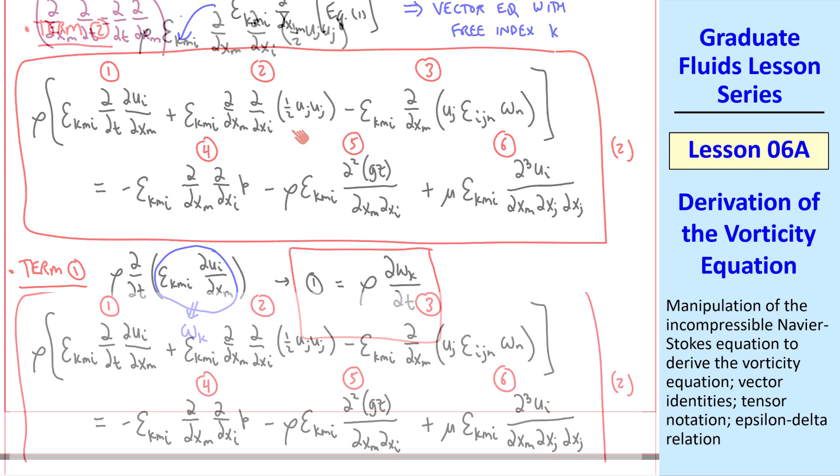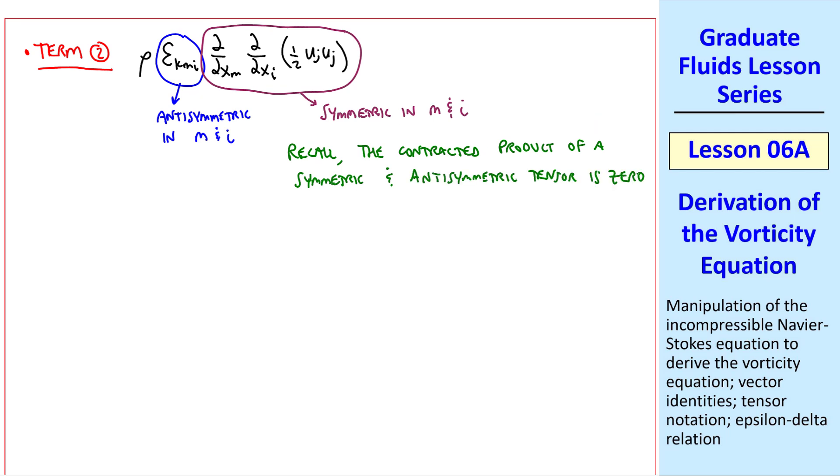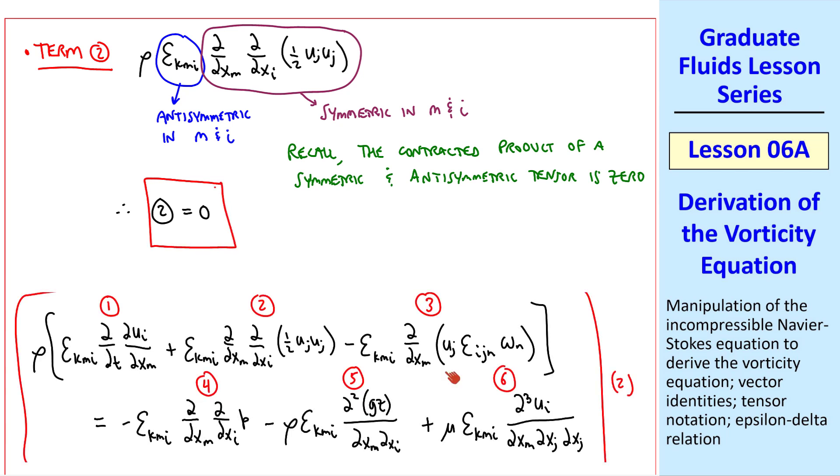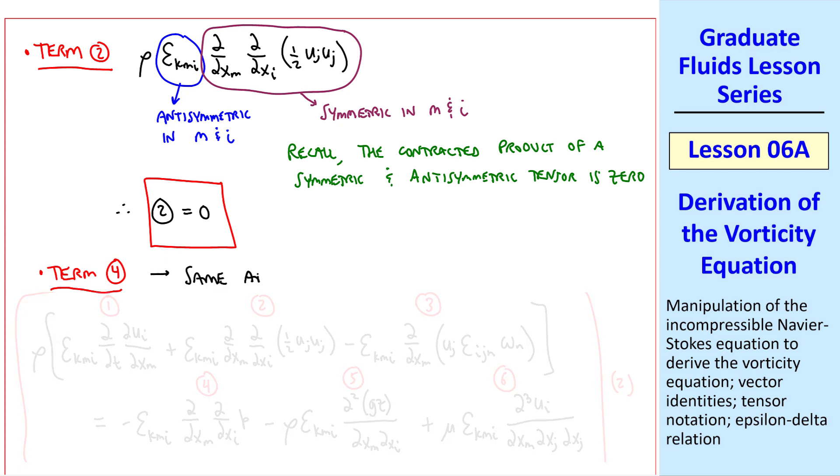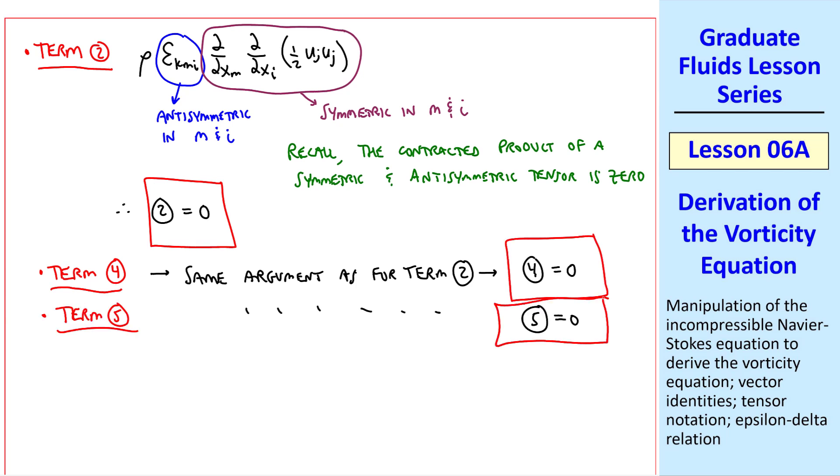Let's look at term 2 next. Recall that epsilon kmi is anti-symmetric in m and i. Which means if you change the order of these two indices, you get the negative of what you had in the beginning. This part, however, is symmetric in m and i. You can call mi an im, and it won't change this term at all. Since the order of differentiation doesn't matter. Now recall from a previous lesson, the contracted product of a symmetric and anti-symmetric tensor is 0. Therefore, term 2 is 0. We'll save term 3 for last, since it's the most involved one. Moving on to term 4 then. We use the same argument as for term 2. Namely, we're contracting the product of a symmetric and an anti-symmetric tensor. So term 4 is also equal to 0. Term 5 is also equal to 0.